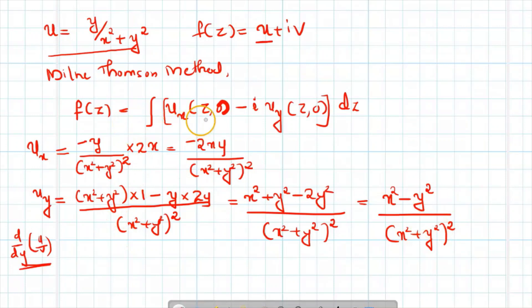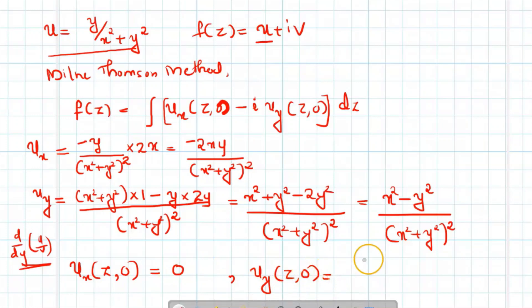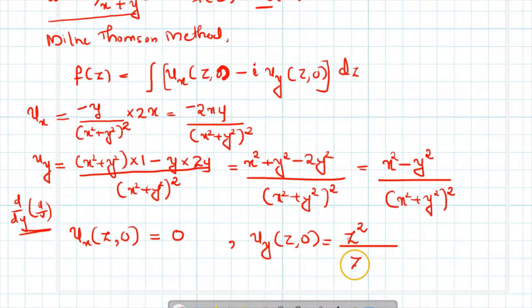Now we evaluate ux at z₀: replace x with z and y with zero. We get minus 2z times zero divided by z square all squared, which is zero divided by something, so ux at z₀ equals zero. For uy at z₀: put x equal to z and y equal to zero, giving z square divided by z square plus zero squared, all squared. Cancelling z square from numerator and denominator gives 1 by z square.